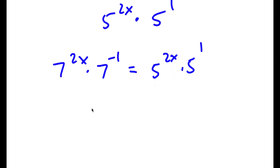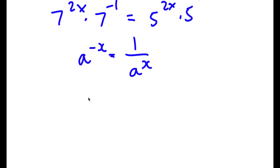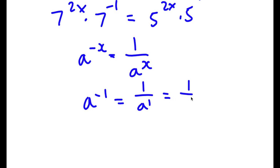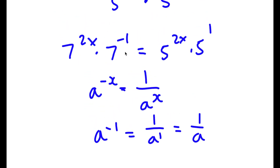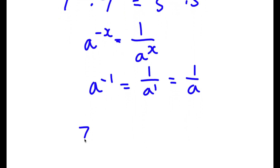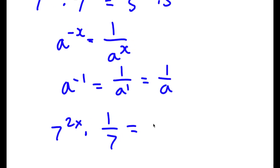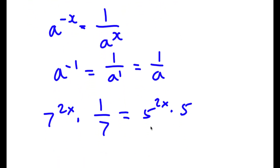Now, if I have something in the form a to the power of negative x, this equals 1 over a to the power of x. So if I had a to the power of negative 1, this equals 1 over a. In this case, 7 to the power of negative 1 equals 1 over 7. And 5 to the power of 1 is simply 5.